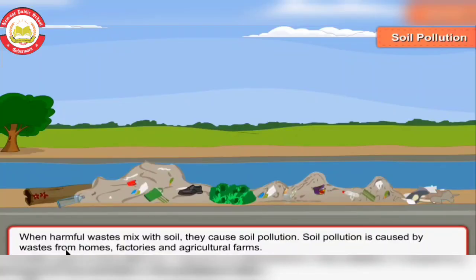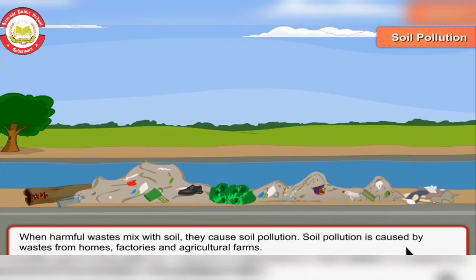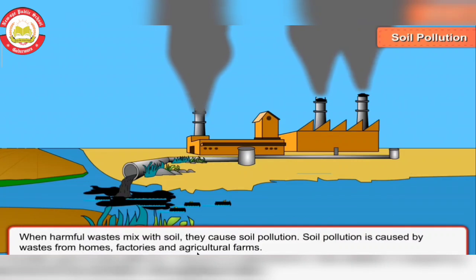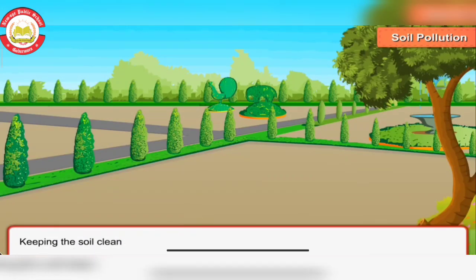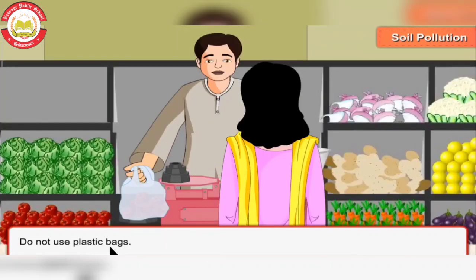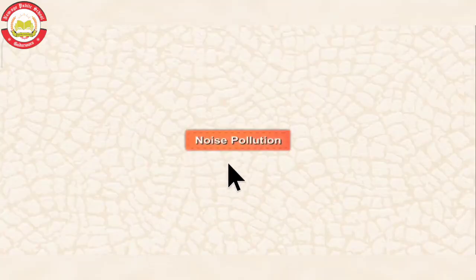Soil pollution occurs when harmful waste mixes with soil. Soil pollution is caused by waste from homes, factories, and agricultural farms. To keep the soil clean: do not throw garbage here and there, and do not use plastic bags.